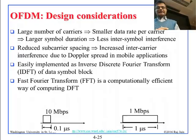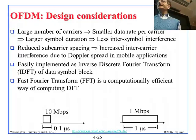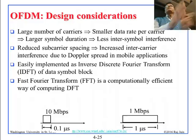Inter-carrier interference also occurs due to Doppler spread. Carriers can shift in frequency because of Doppler — if you are moving, a carrier that was at one frequency appears at another. OFDM is easily implemented as IFFT on the transmit side and FFT on the receive side. FFT is a computationally efficient way of computing the DFT.